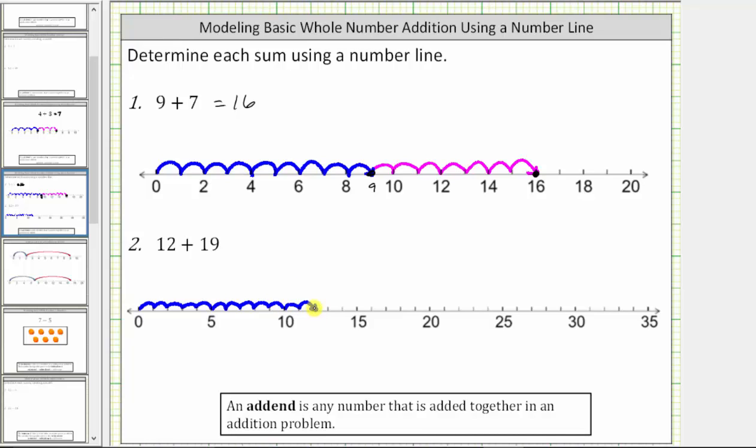Let's go ahead and make a point here and label this 12. And then because we have plus 19 from here, we move 19 more units to the right.